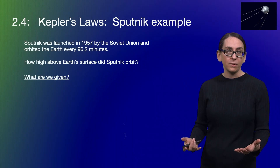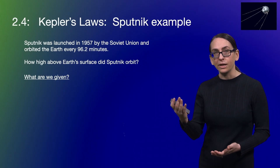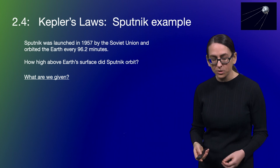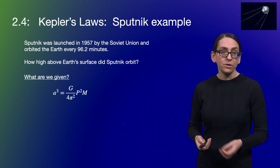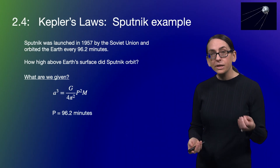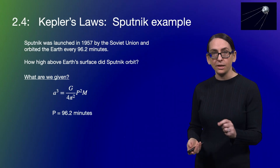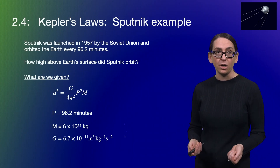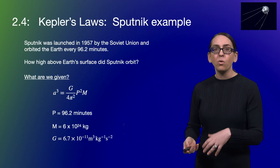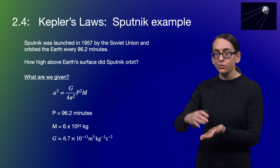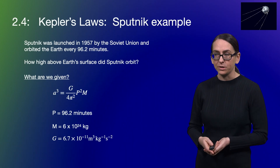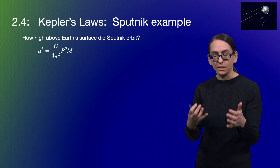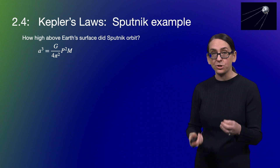Whenever you're given a problem, it helps to be really organized. So first, ask what is the stuff that we know — what are we given? Let's write those down very methodically. We know Kepler's law. We're given the period of Sputnik: 96.2 minutes. We also know the mass of the Earth and the gravitational constant. That's what we know. What are we asked for? We're asked for the height above the Earth's surface — a distance. So let's figure out that distance, the semi-major axis.